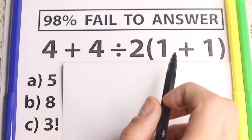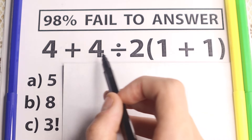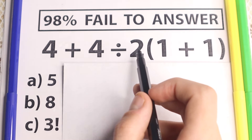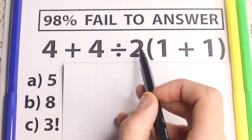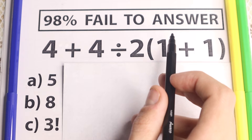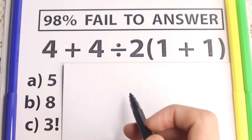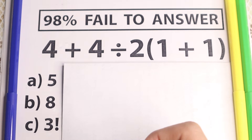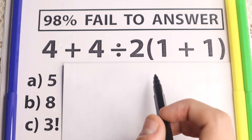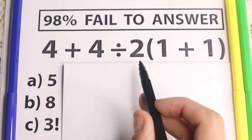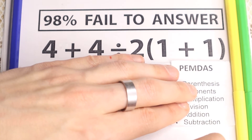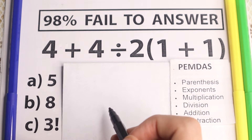Obviously, whatever order we select is going to create a different answer, because here is the question: do we do division first then addition, or multiplication then division, or addition then parentheses? A lot of combinations, a lot of answers. So obviously we need to understand what is the correct order of operations. We have addition, division, multiplication, and parentheses — what is the first step?